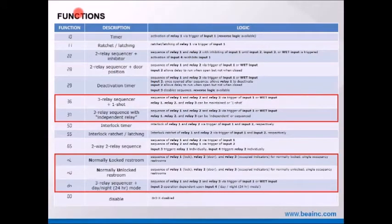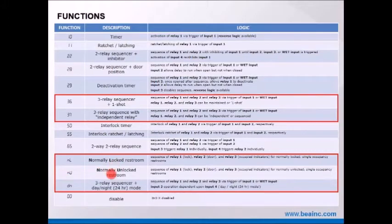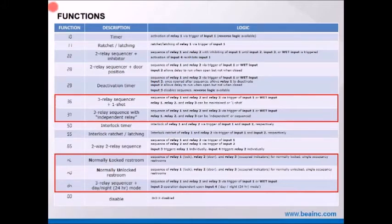Functions — today in this presentation we will discuss the highlighted areas: function 36, function 37 which is new for the BR3X, NL for normally locked restroom, NU for normally unlocked restroom, and DN for day-night mode. All other functions shown are shared between the BR3 and BR3X, but those highlighted are what we'll be showcasing today.